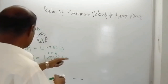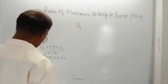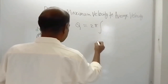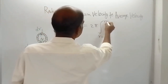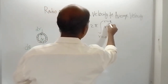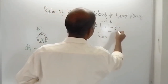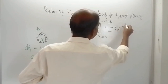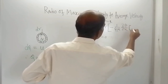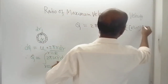Substituting the expression for U, Q equals 2π times the integral from 0 to R of r · [minus 1 by 4μ · (dP/dX) · (R² − r²)] · dr. Here dP/dX is constant for a given cross-section, so the constants come outside the integral.